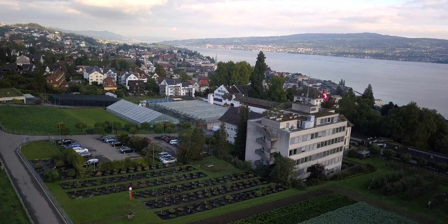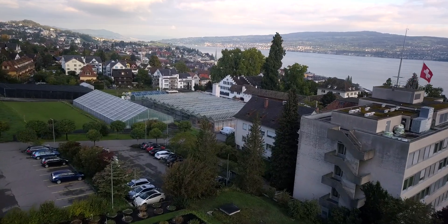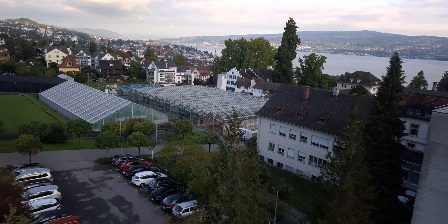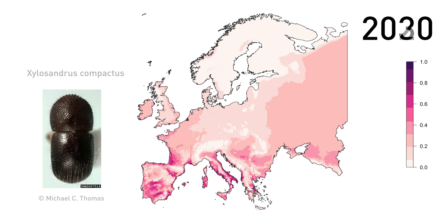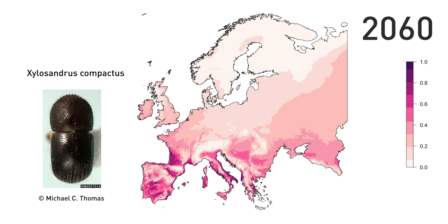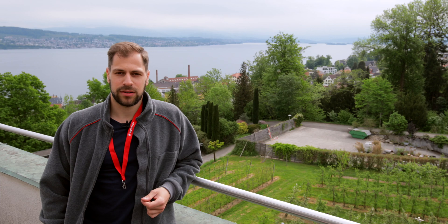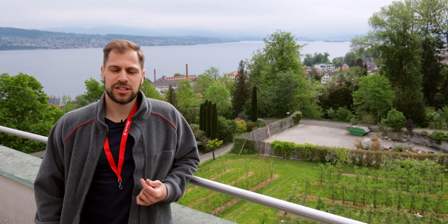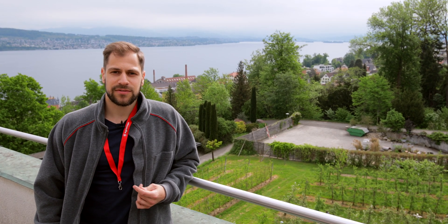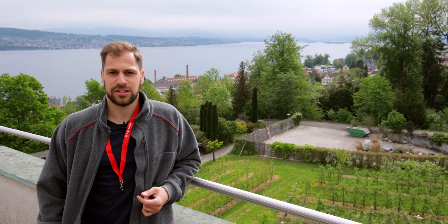To forecast how the distribution of the pests will change in the future, we can project the model to future climate change scenarios. With the outputs of our models, we can forecast for each species if and when it has the potential of invading a certain area. This information can be used for decision makers as a basis for development and implementation of novel crop protection strategies.